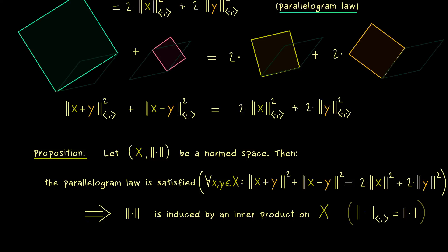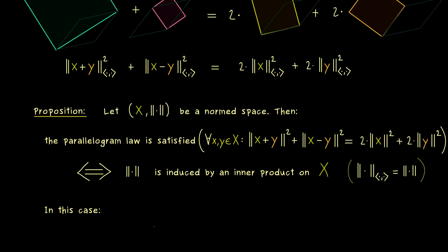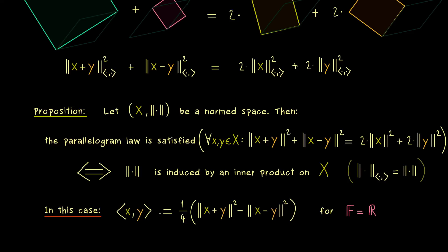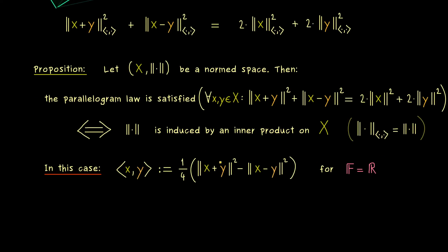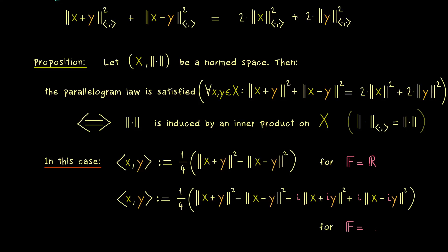By the calculation at the start of the video, we also know the converse implication holds. Therefore, the important takeaway is that the parallelogram law is equivalent to a norm actually being an inner product norm. You should also know that in the last video, we learned the polarization identity, which tells us how to write down the inner product using only the induced norm. More concretely, for our special norm here, this difference defines the inner product on X. Please note this only holds for the real case — the complex case has two more terms in the sum, but is not really more complicated.